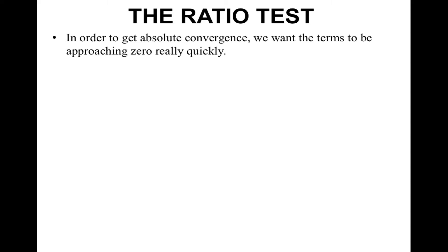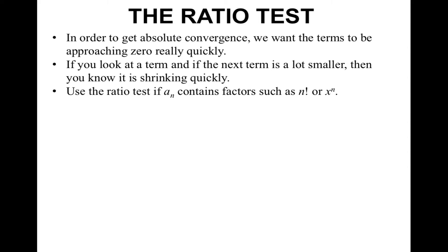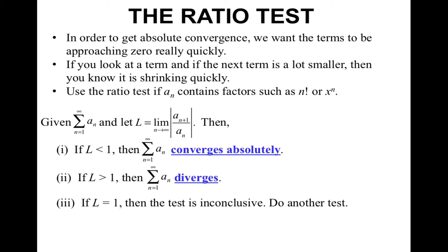This leads us into the ratio test. In order to get absolute convergence, we want the terms to be approaching zero really quickly. If a term's next term is a lot smaller, you know it is shrinking quickly. You use the ratio test if a sub n contains factors such as n factorial or x to the n power. The ratio test says: let the limit as n approaches infinity of the absolute value of a sub n+1 over a sub n equal L. If L is less than 1, the series converges absolutely. If L is greater than 1, the series diverges. If L equals 1, the test is inconclusive and you must use a different test.